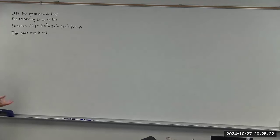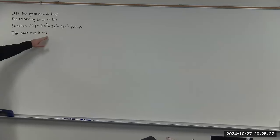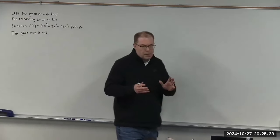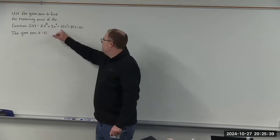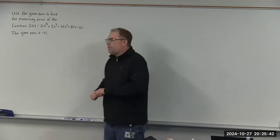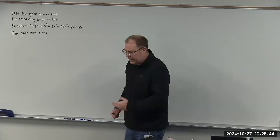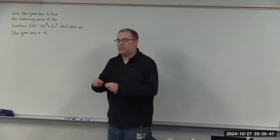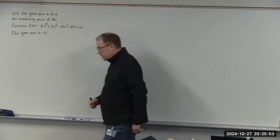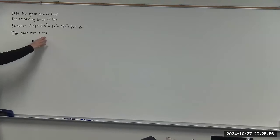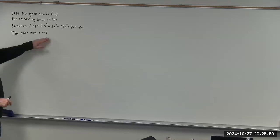The way this is going to work is: since we're given one of the zeros, and in this case it's a complex value — an imaginary value — because this function has real-valued coefficients, if the polynomial has a complex root, then the complex conjugate of that root is also going to be a root. So because we're given negative 5i, that means 5i is also a root for this function.